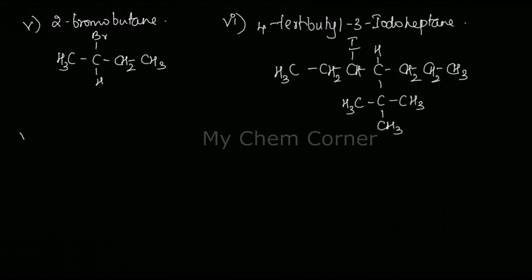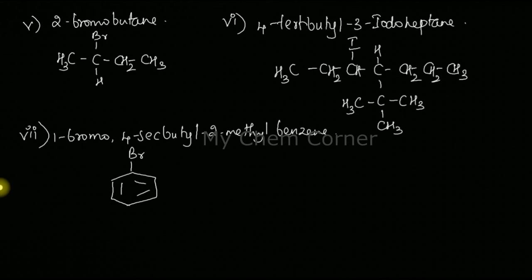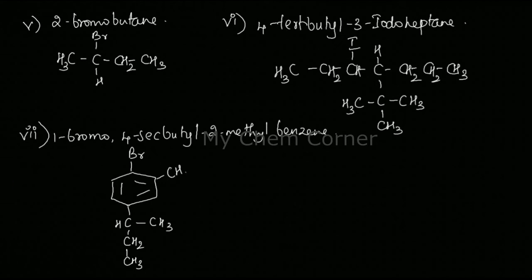The seventh one is 1-bromo-4-(sec-butyl)-2-methylbenzene. The parent hydrocarbon is a benzene ring. At the first position I place Br. At the fourth position I have a secondary butyl group, meaning a secondary carbon for the butyl group at that position. At position number two of the benzene ring I have a methyl group.